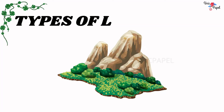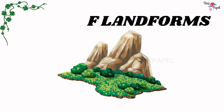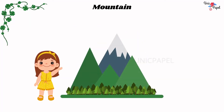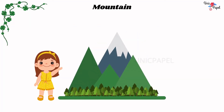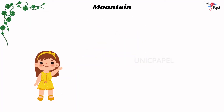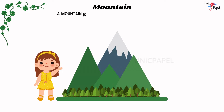Types of Landforms. Mountain: A mountain is a large elevated part of the earth.